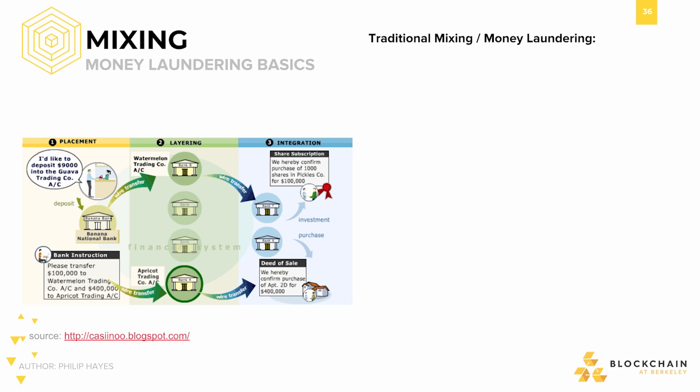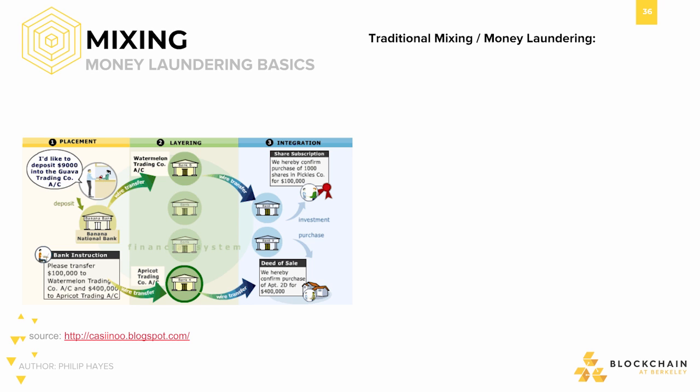To better understand mixing's mechanisms, we're going to examine a traditional scenario where money's origins are obfuscated: money laundering. The reason why money laundering serves as a good base is because their goals are the same. Money laundering is the very illegal activity of moving large amounts of undetected money between countries or between the underground and legitimate economy. Traditional money laundering uses hundreds of fake shell companies — called shells because they don't do anything or own any assets — however, they appear to in order to successfully serve as money laundering devices for tax purposes.